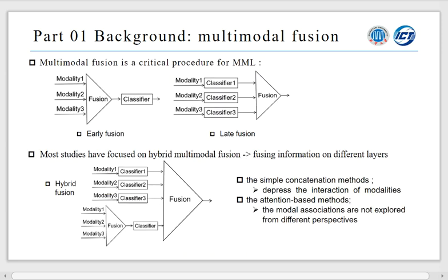Multimodal fusion is a critical procedure for multimodal learning. The multimodal fusion methods can be divided into three categories based on the stage in which fusion occurs during the associated procedures: namely early fusion, late fusion, and hybrid fusion. In recent years, most studies have focused on hybrid fusion that allows fusing multimodal information on different layers of the model. The hybrid multimodal fusion methods can be divided into two classes: one is the simple concatenation methods, and the other is attention-based methods. However, simple concatenation methods may deprive the interaction of modalities, and the ordinary attention-based methods do not explore the modalities' associations from different perspectives.